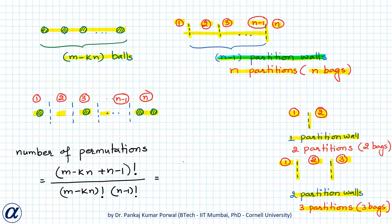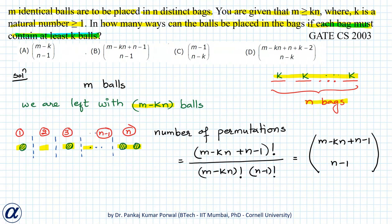And this can also be written as (m minus kn plus n minus 1) choose (n minus 1). So option B is correct.